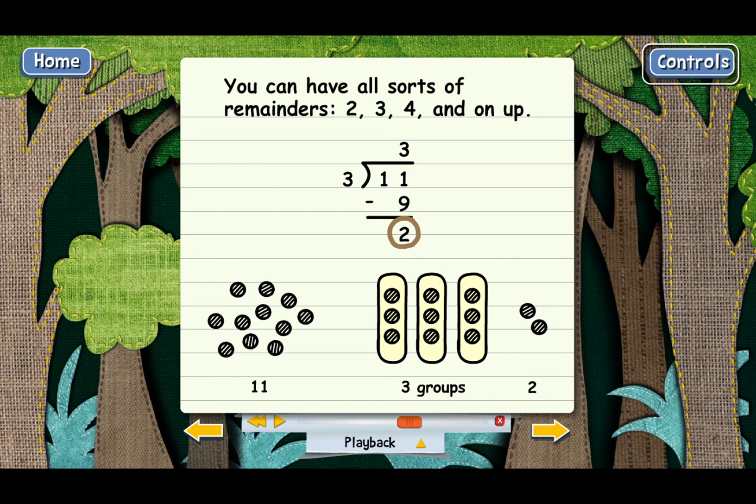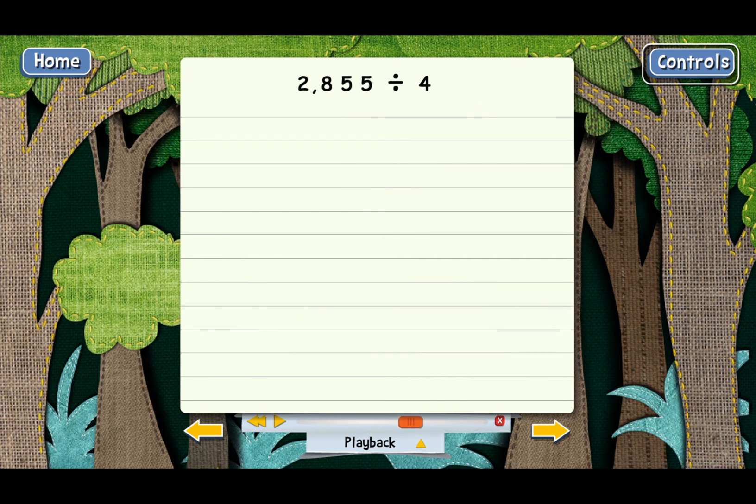Let's do one more example. 2855 divided by 4. We need to put the 2855 inside the division box and the 4 goes on the outside. And then remember the steps: divide, multiply, subtract, then bring down the next digit.